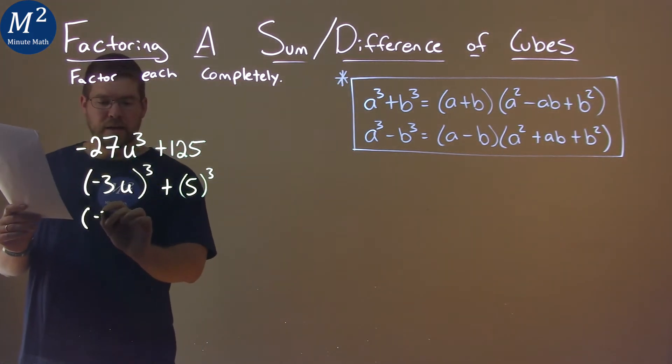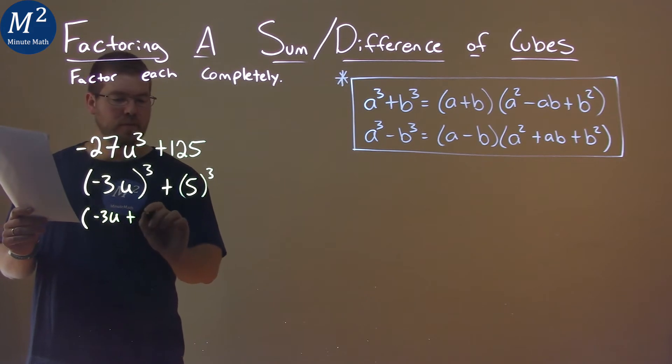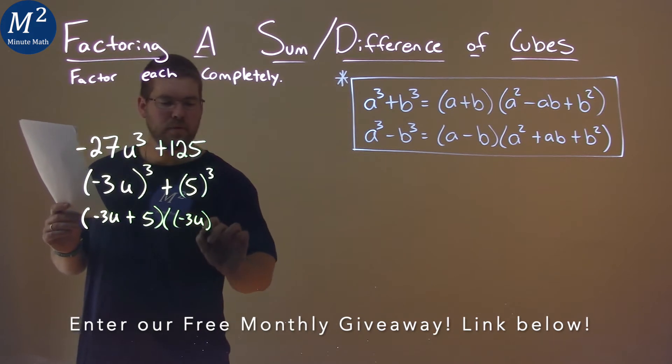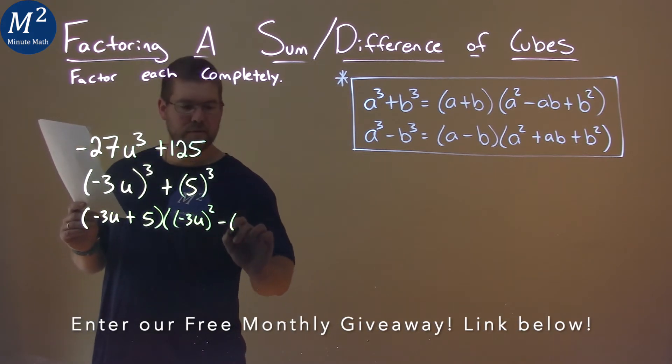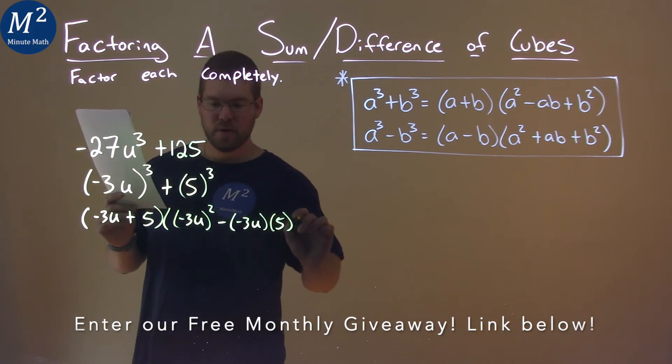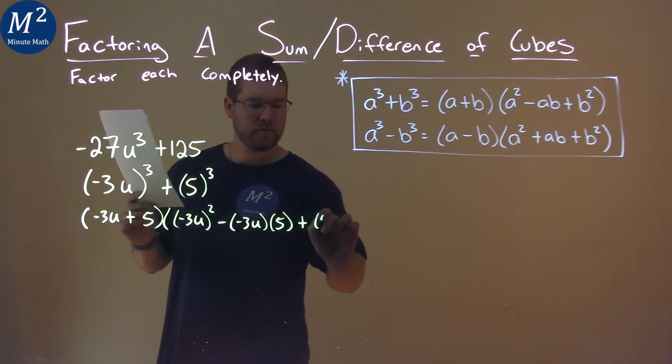a, negative 3u, plus our b value which is 5. Then keep on going. We have negative 3u squared minus negative 3u times 5 plus 5 squared.